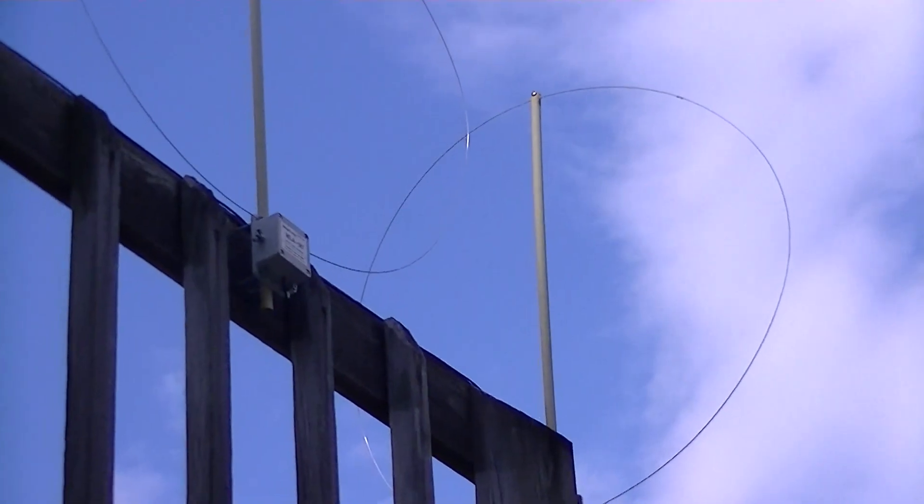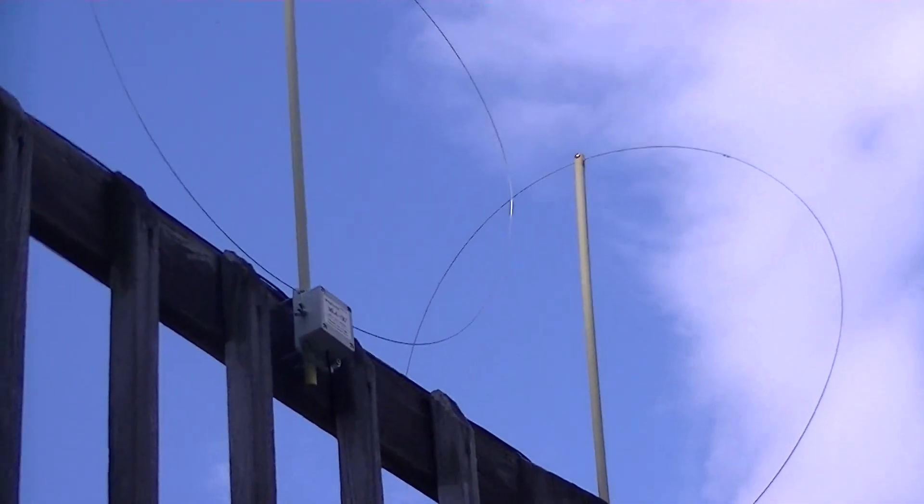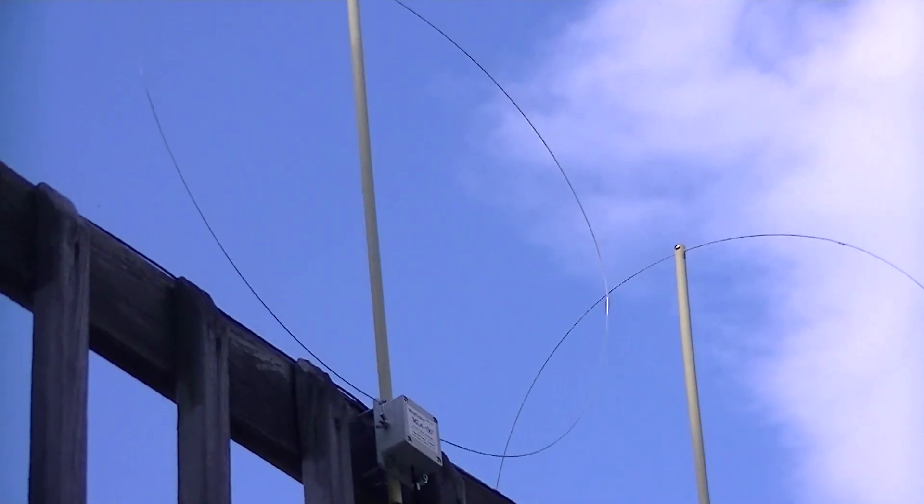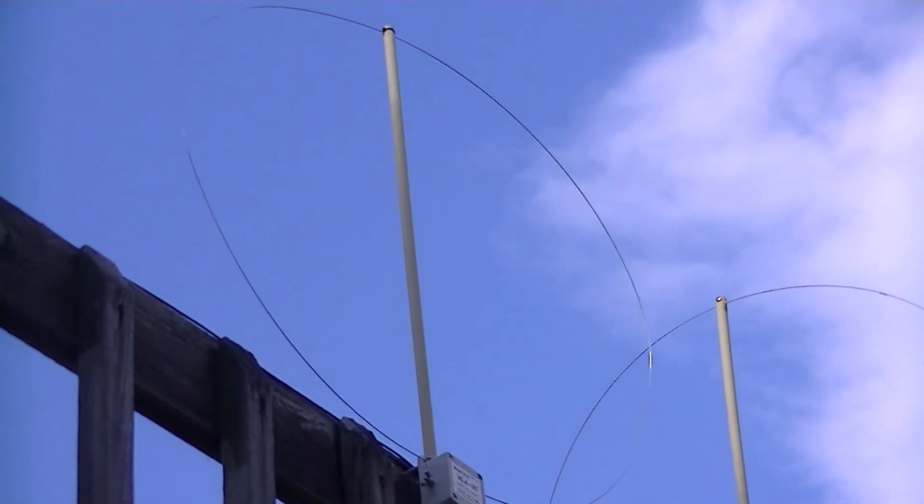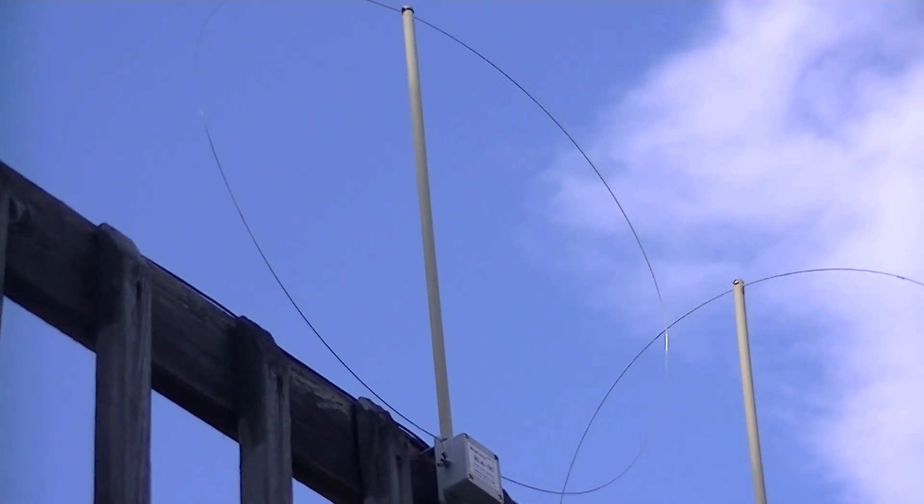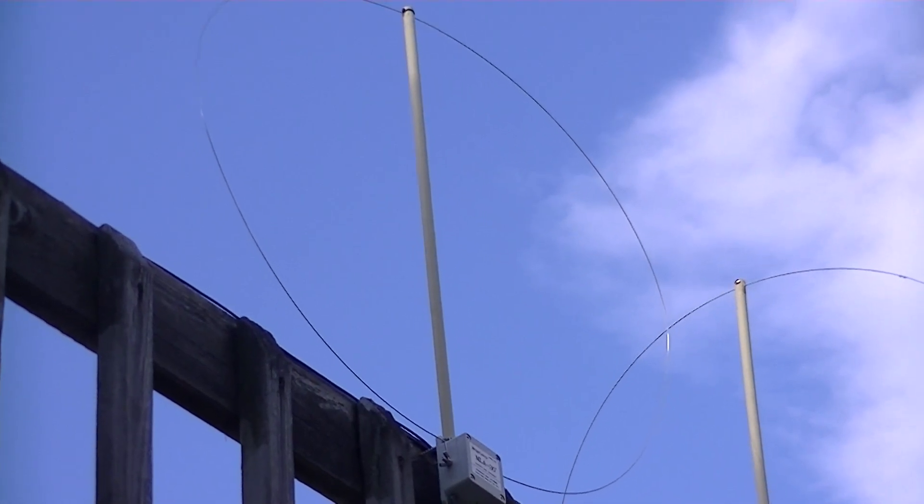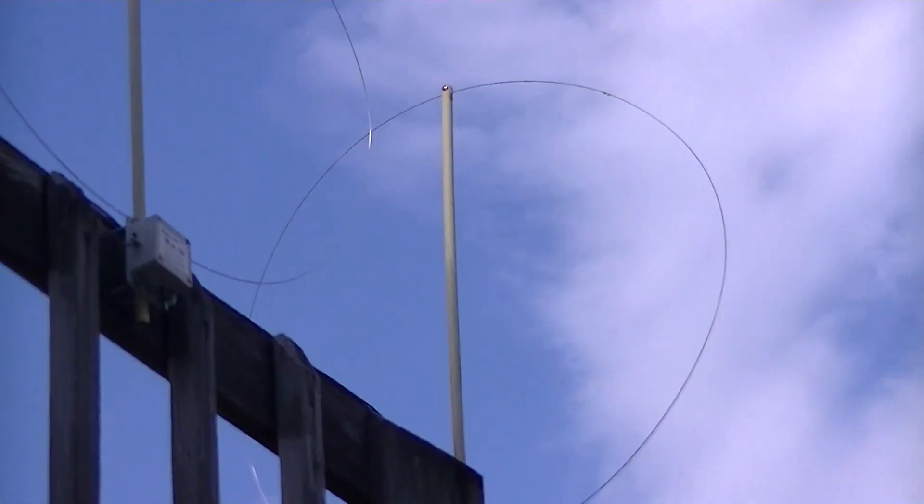These two antennas are mounted at right angles to each other. This one is an east-west orientation and this one is north-south.